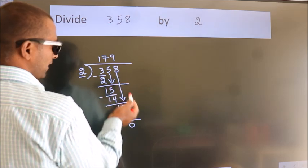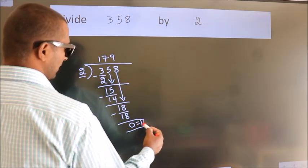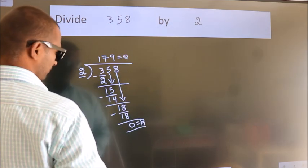No more numbers to bring it down. So, we stop here. This is our remainder. This is our quotient. The value is 179.